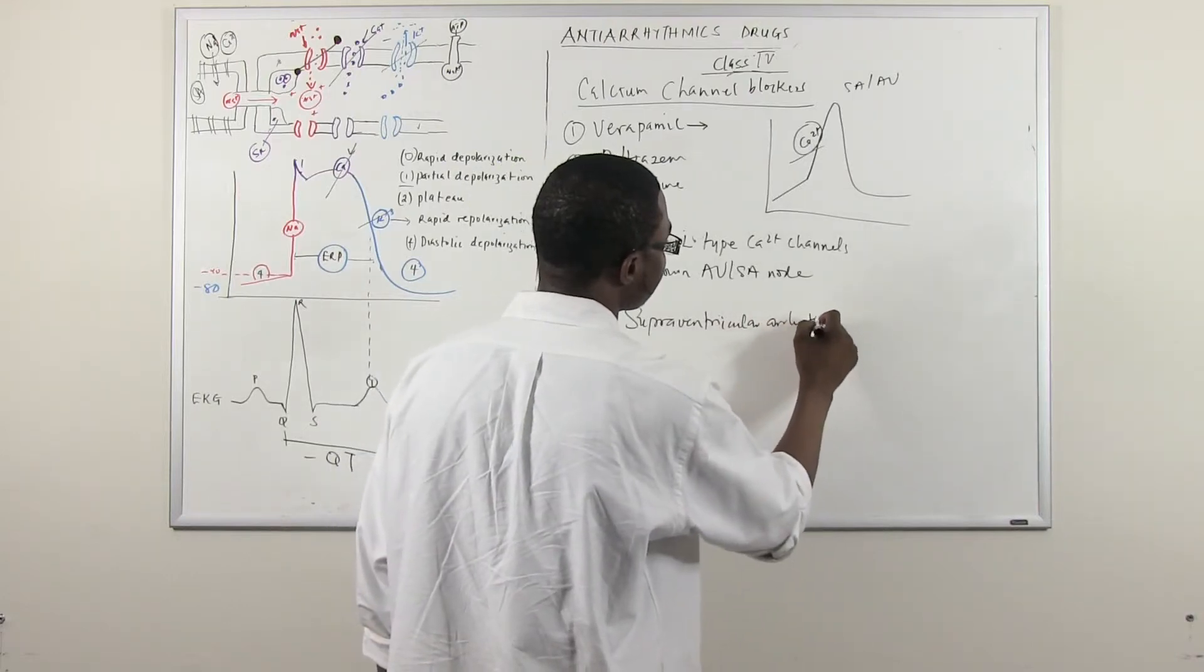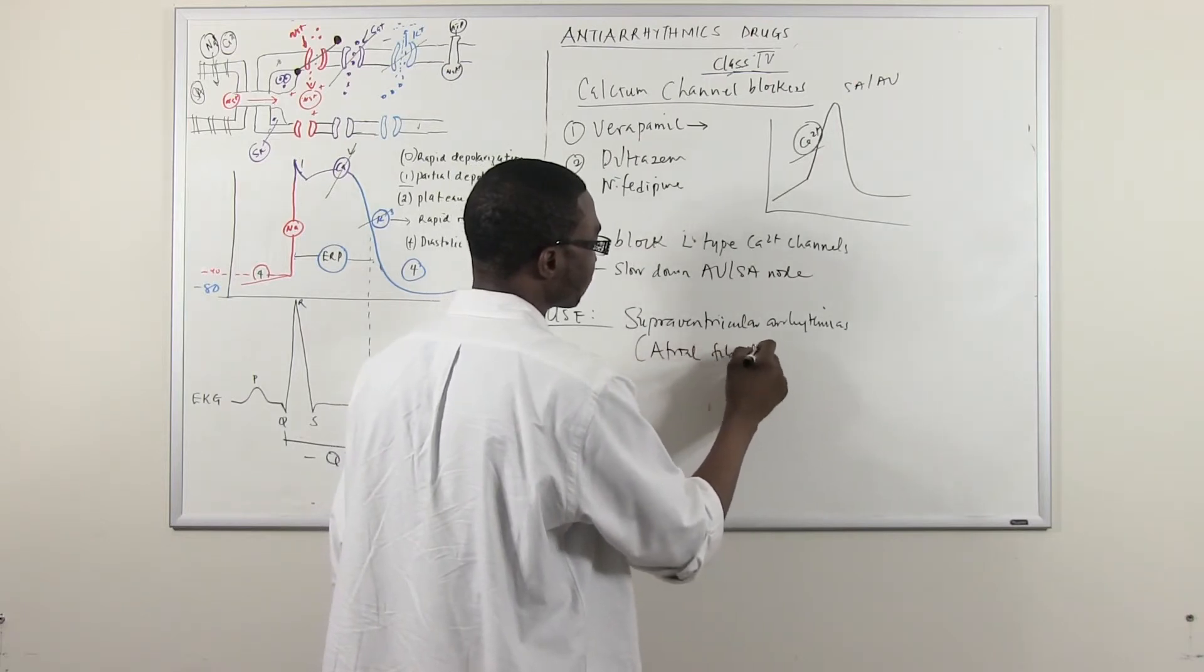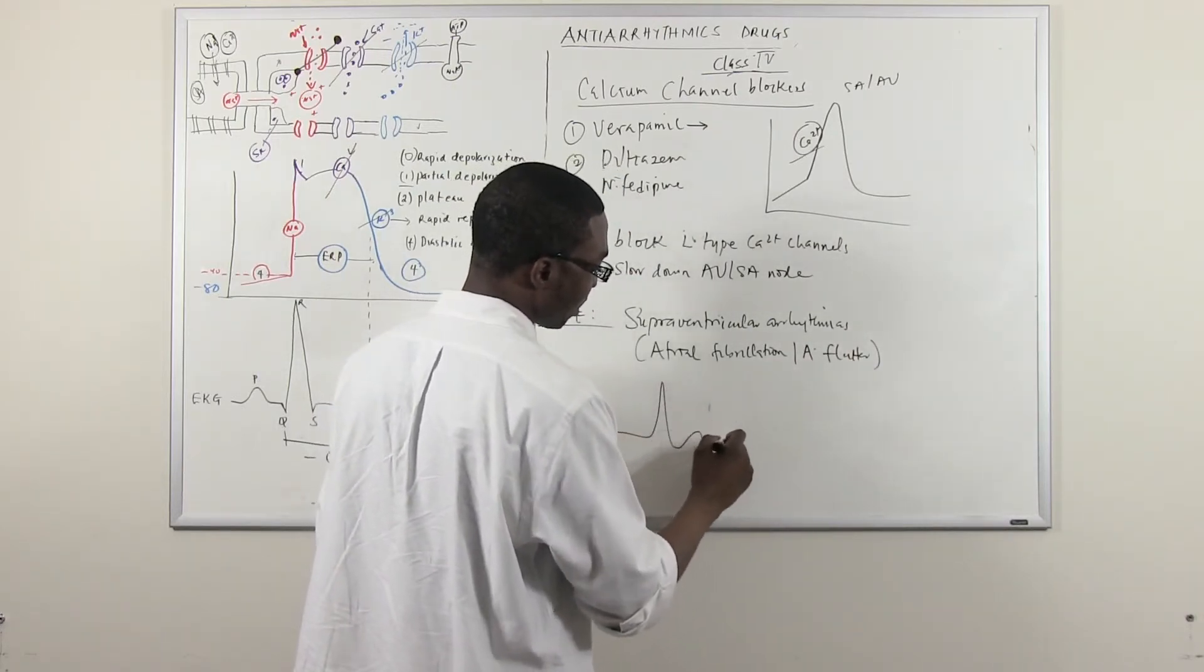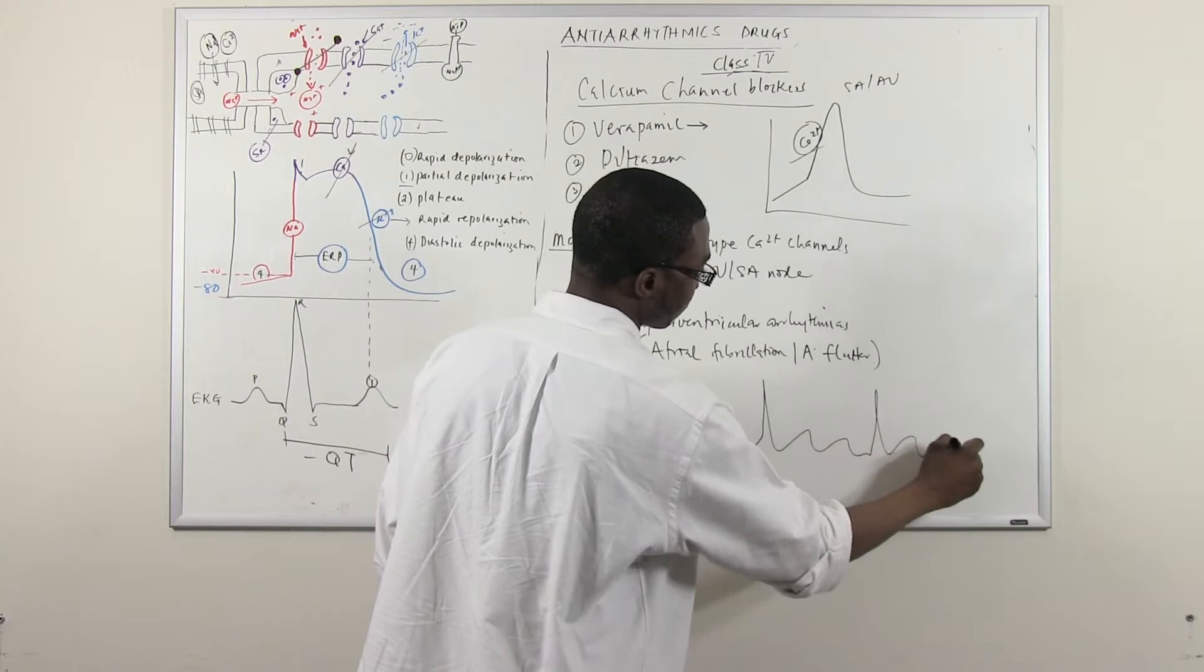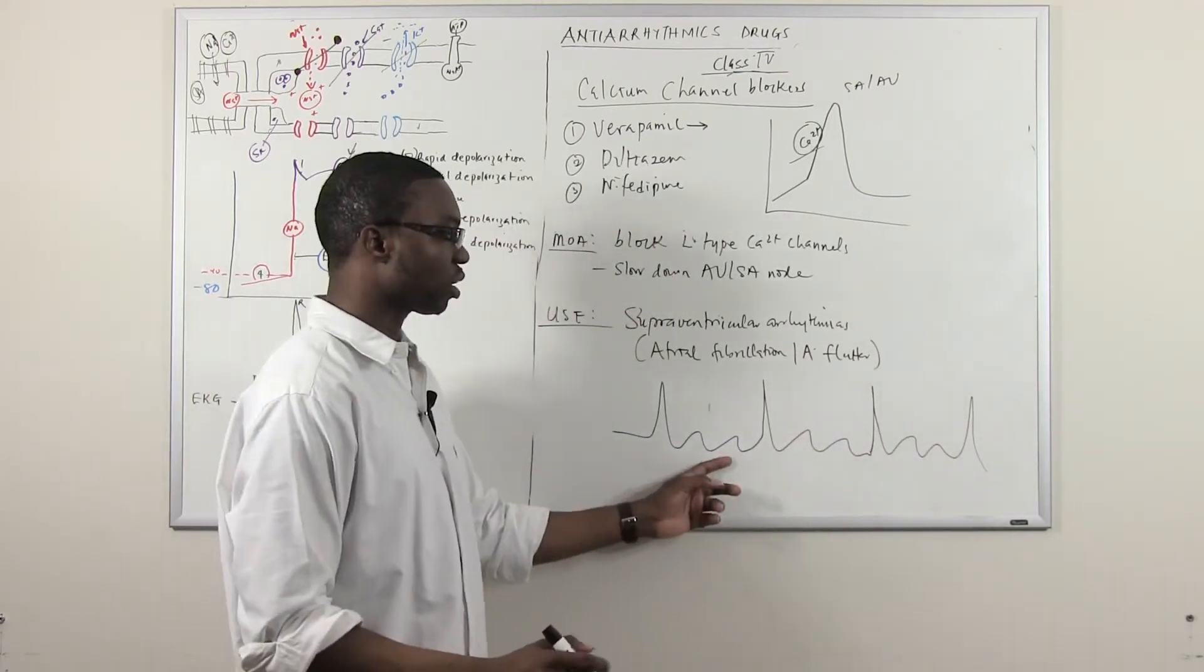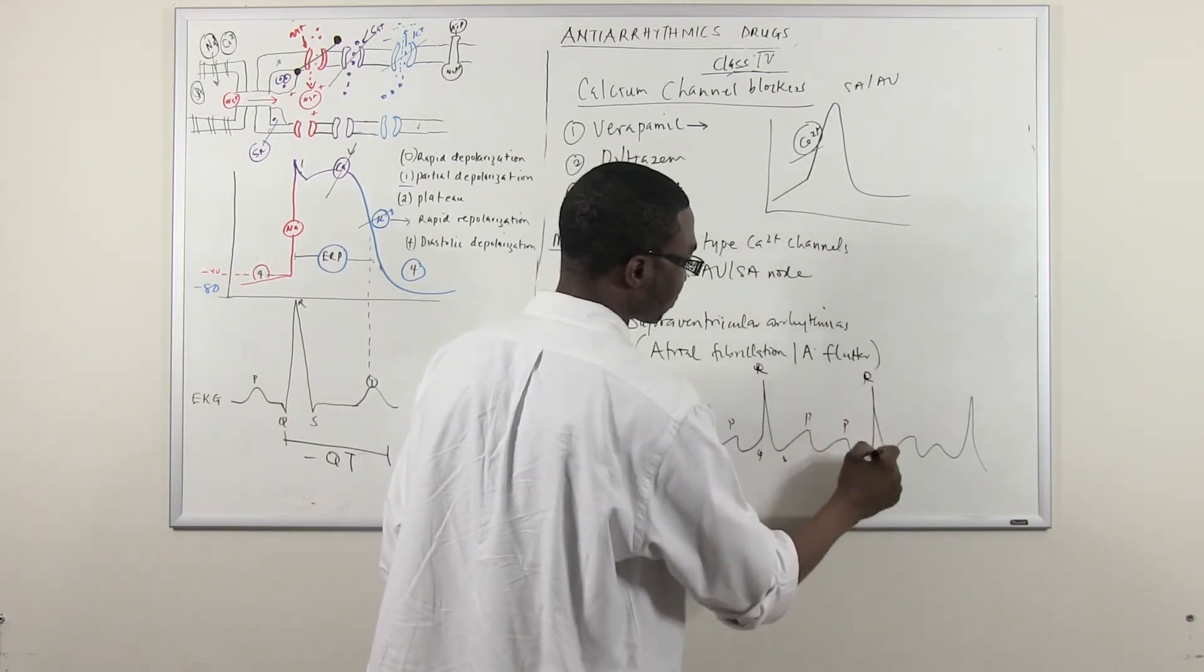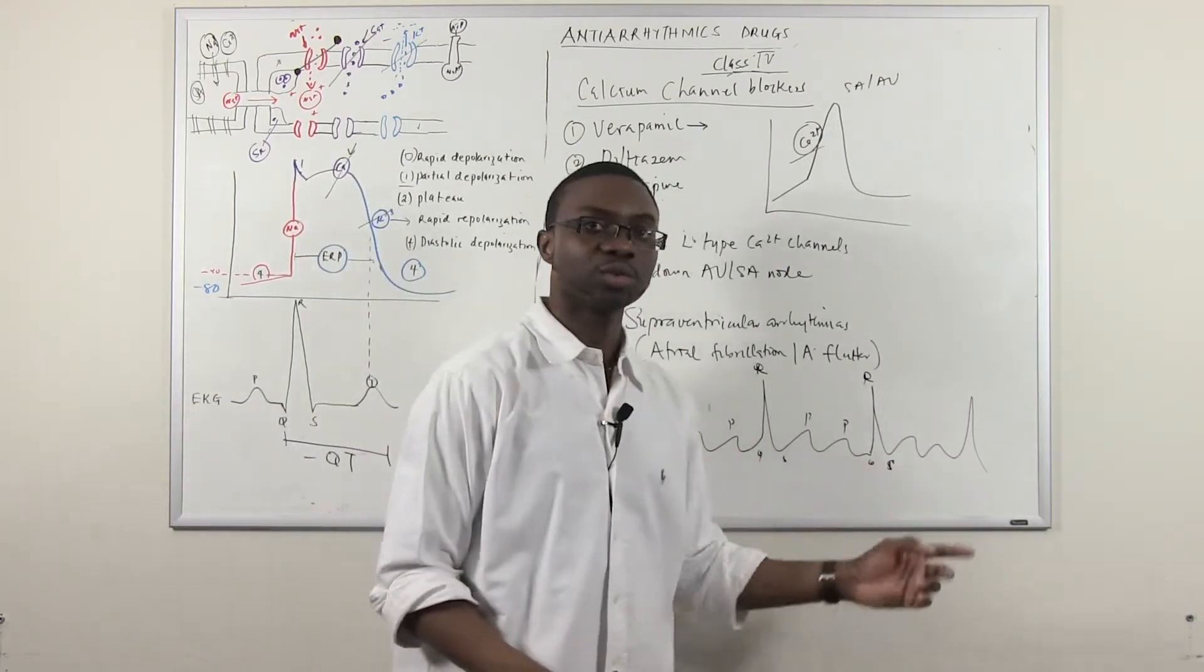Supraventricular arrhythmias, which is atrial fibrillation or atrial flutter. Atrial flutter basically has the QRS with a 2-to-1 conduction. There's two P waves with QRS complex. That's atrial flutter.